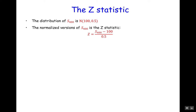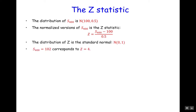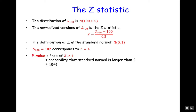Now we have the random variable z, and its distribution is the standard normal. So if S400 is 102, we can easily see that it corresponds to z being 4. So what is the p-value? The p-value is the probability that z would be 4 or larger, which is the same as the probability that the standard normal is larger than 4, and we denote that simply by Q(4).